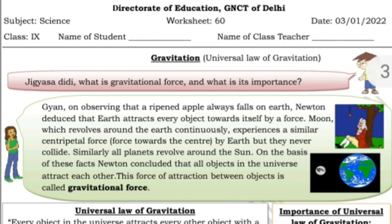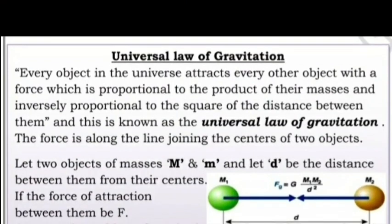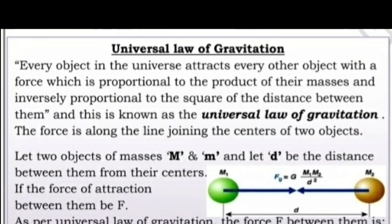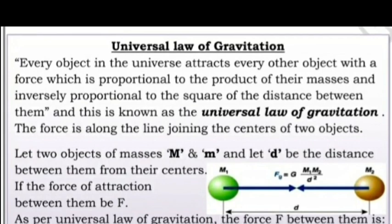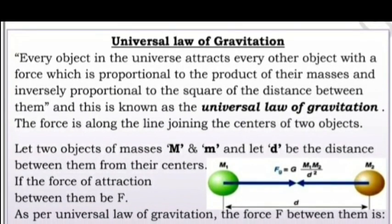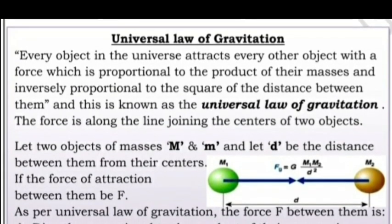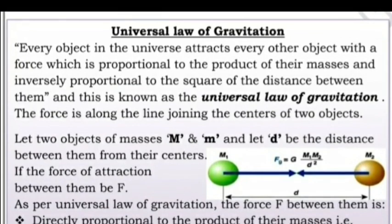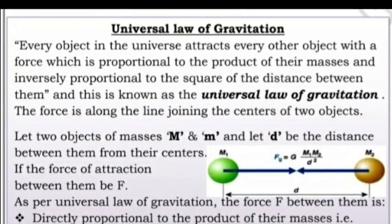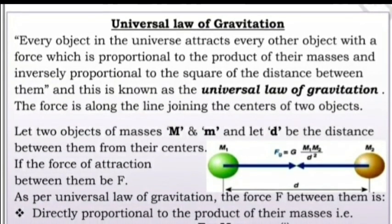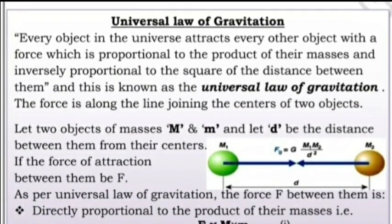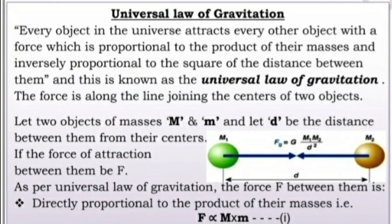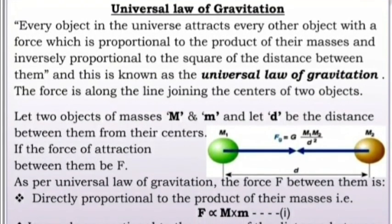Universal Law of Gravitation: Every object in the universe attracts every other object with a force which is proportional to the product of their masses and inversely proportional to the square of the distance between them. This is known as the Universal Law of Gravitation. The force is along the line joining the centres of the two objects.